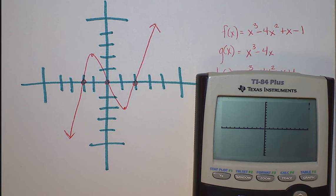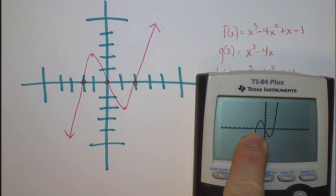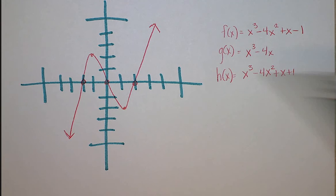Graphing g of x, and it does appear to be g of x, intersects at 2, 0, and positive 2 rises on the right, falls on the left. Correct answer is g of x.